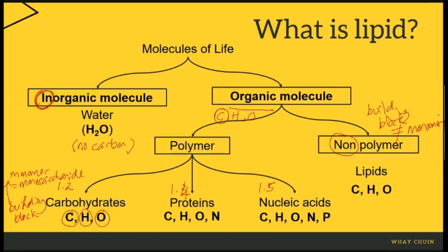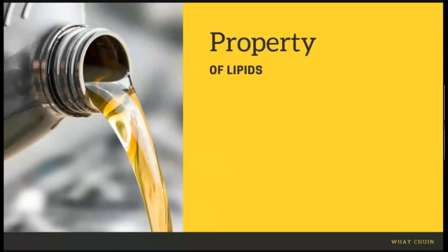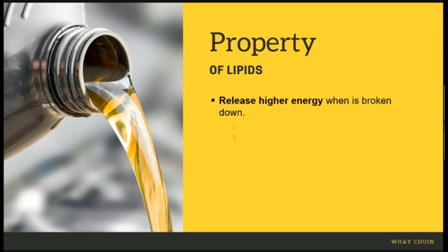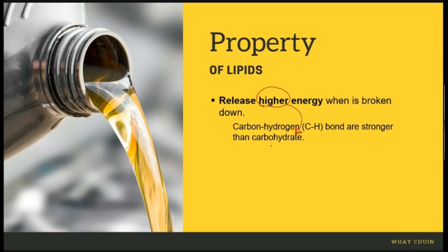Referring to the old syllabus, we briefly mention the properties of lipid, as they are famous in MCQ objective questions. The first unique characteristic is that lipid molecules are able to release higher energy, especially compared with carbohydrates. Both glycogen and starch can provide energy, but what makes lipid different is that the bond between C and H is stronger — meaning they carry higher energy — so when broken down, a higher amount of energy is released.